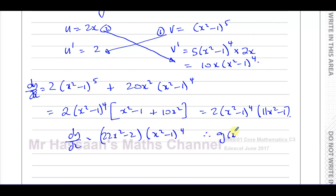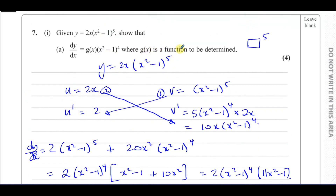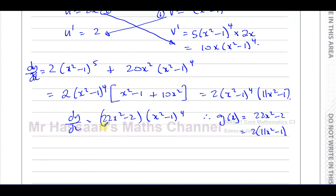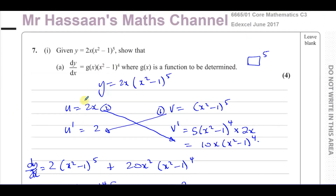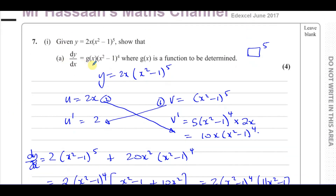They want it in the required form, so that 2 should be multiplied in. I can write dy/dx equal to 22x squared minus 2, times x squared minus 1 to the power of 4. So therefore g of x is equal to 22x squared minus 2. You can also factor it as 2 times 11x squared minus 1 — both forms are fine. So g of x is the function to be determined, and that's the dy/dx.